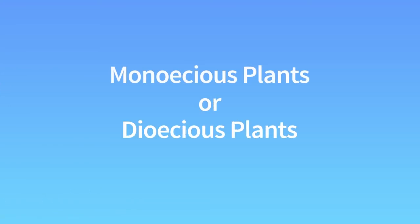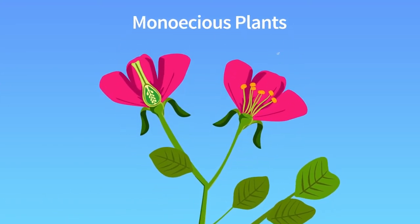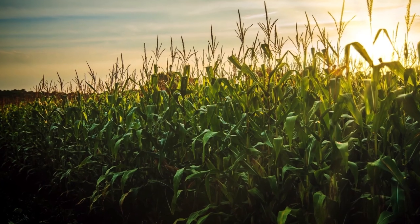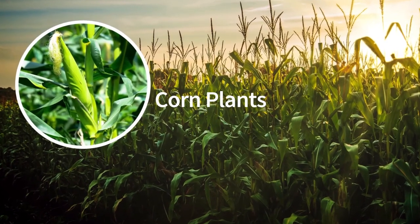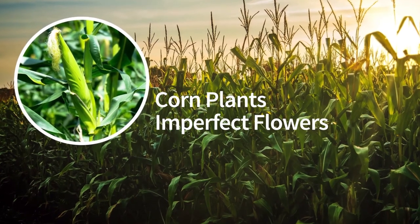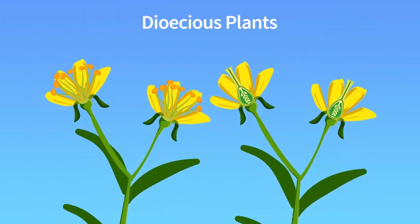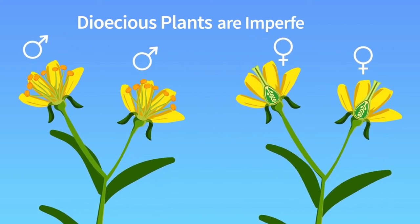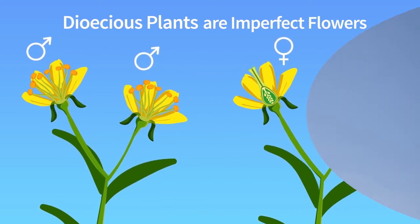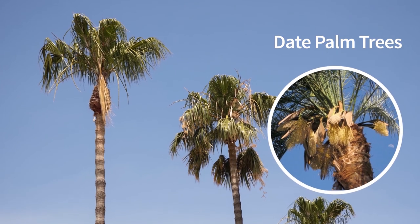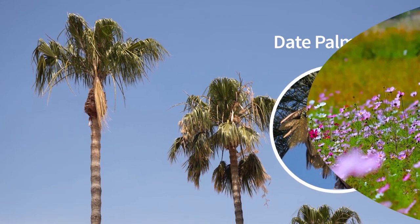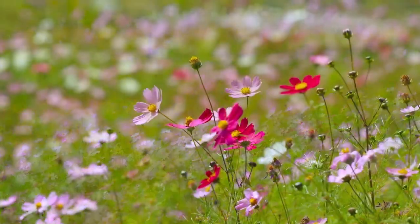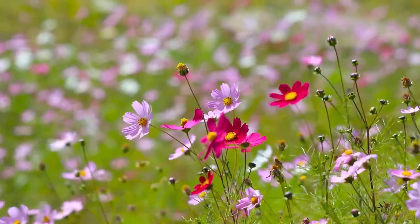Plants can also be classified as monoecious or dioecious. Monoecious plants carry both male and female flowers on the same plant — examples include corn plants; in this case the flowers are imperfect. Dioecious plants have male and female flowers on separate plants; these flowers are also imperfect — examples include the date palm. With this great variety of flowering plants, the world in which we live is indeed mesmerizing.